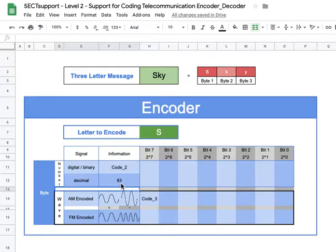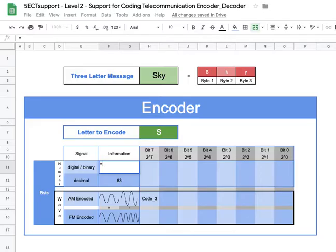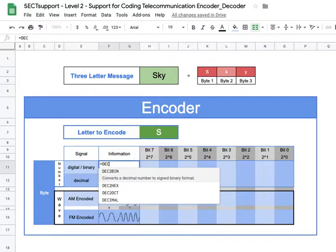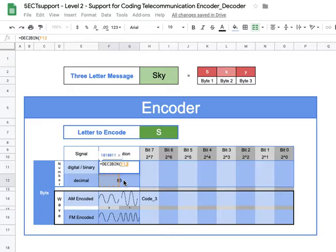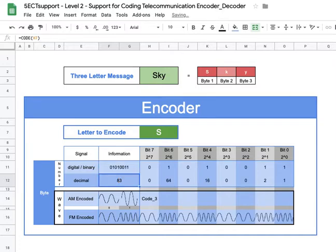The next thing we need to do is convert this to its digital or binary number — the digital signal in binary zeros and ones. We need to convert decimal to binary. The function is: equal sign, DEC (short for decimal), then the number 2, then BIN (short for binary) — so decimal to binary. We grab cell F12, and since it dropped the leading zero, we add comma 8 in parentheses to always output eight digits, then press Return.